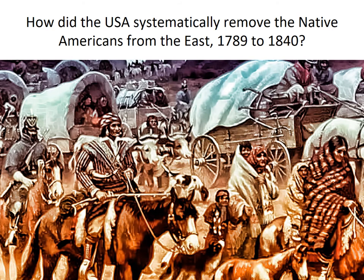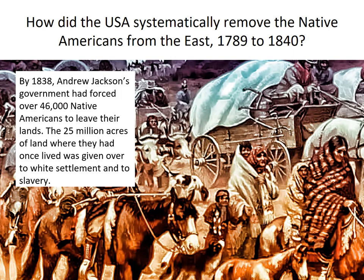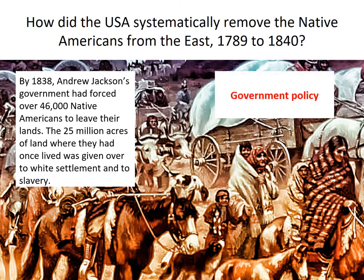By 1838, Andrew Jackson's government had forced over 46,000 Native Americans to leave their lands, and 25 million acres where they had once lived were given over to white settlement and to slavery, which grew in that southeast region. So how did the US government remove the Native Americans from the east? They did it in three ways — the first was through government policy, whether that was the policy of trying to force them to be civilized or the Indian Removal Act.